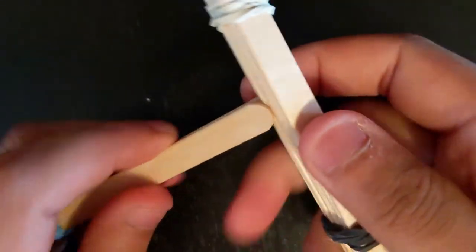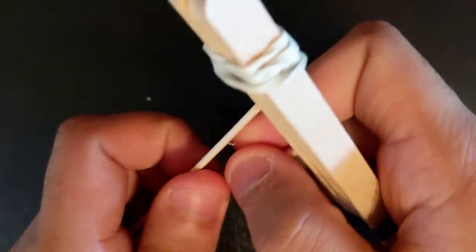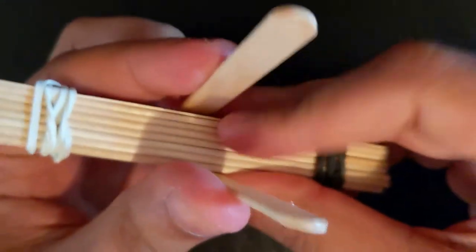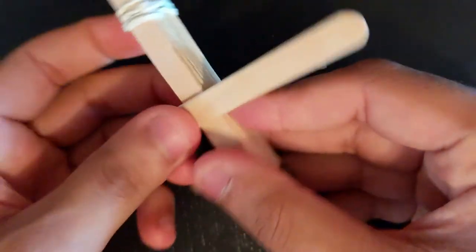For your next step, you will take your stack of eight popsicle sticks and insert it between the two popsicle sticks in your other stack. Try to push the larger stack as far as you can between the two popsicle sticks.